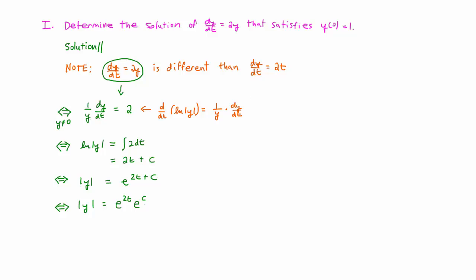That might not look much simpler, but let's think carefully about this. If c can be any real number, then what is e to the c? To answer this question, it will help us to consider the graph of y equals e to the x, which looks like this.